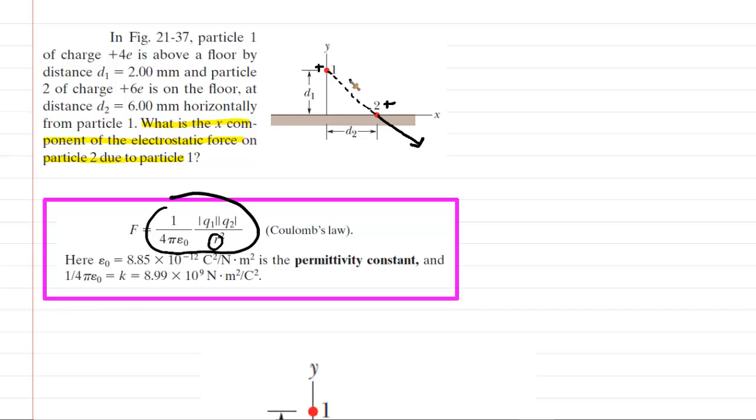So that would be this distance right here. We might make it our goal first to figure out that distance. Now, we certainly have a right triangle formed by d1, d2, and then that distance r. So the Pythagorean theorem would certainly apply here. So let's go ahead and find that distance.